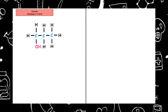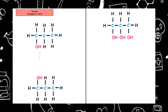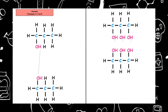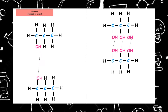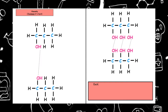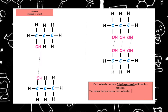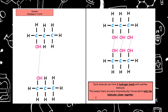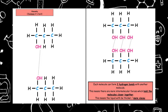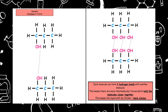Now looking at viscosity, which is the thickness of a liquid. Again, if we look at propan-1,2,3-triol, each molecule can form three hydrogen bonds with another molecule. This means there are more intermolecular forces which hold the molecules closer together, and this means that the liquid will be thicker or more viscous.